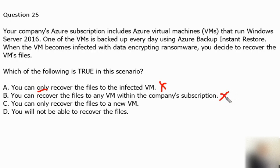Option C: you can only recover the files to a new virtual machine. This is definitely the recommended approach. Restoring the virtual machine to a new Azure VM ensures a clean and isolated environment. By creating a new Azure VM, you can ensure that the restored virtual machine is free from any ransomware. This is the correct answer.